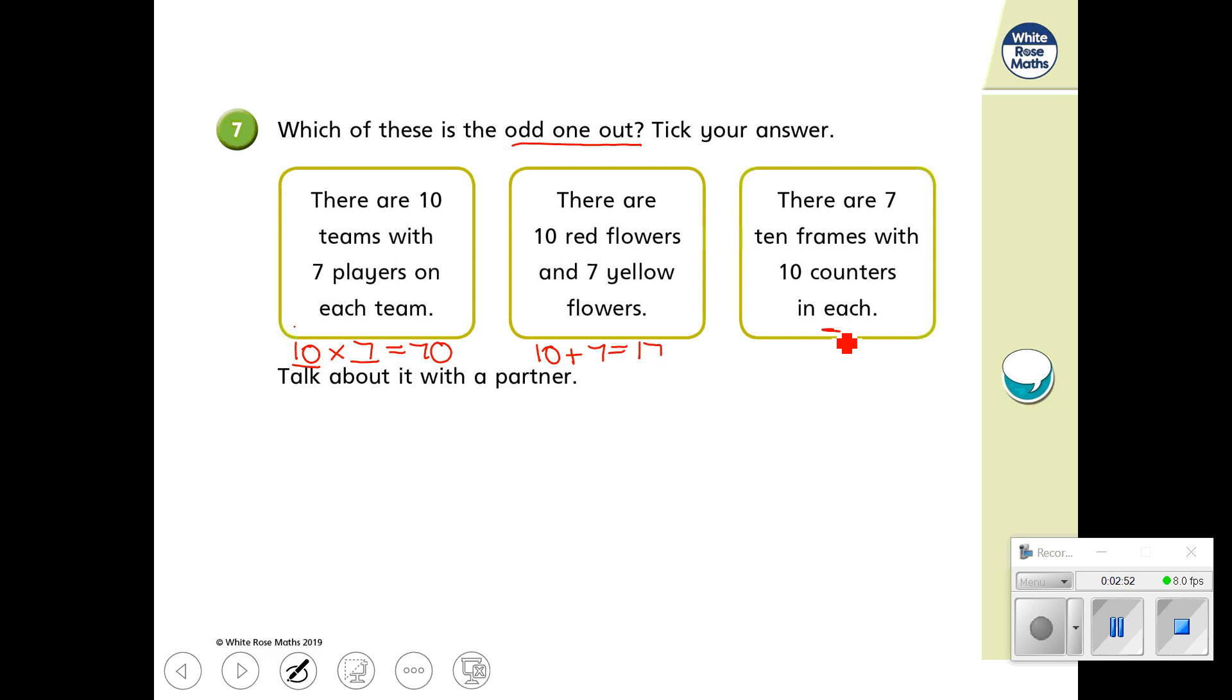And in my final box here, there are 7 ten frames with 10 counters in each. So I've got 7, 10 frames with 10, which also means 70. So if we look at the information we've got, we can tell that this middle box is the odd one out, because the answer or the total number of items in each box is 17, whereas the other two boxes both have 70. Moving on.